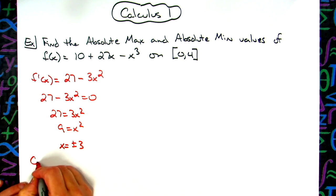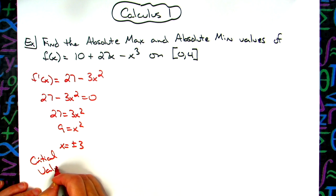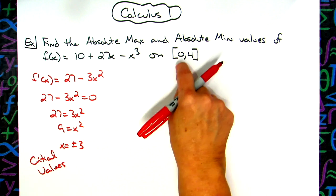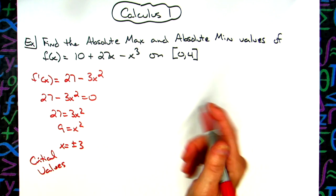These are my critical values. If I want to find the extrema or the absolute maximum on a closed interval, I'm going to test the critical values that fall in the interval as well as my two endpoints, and I'm going to test them into the original function.